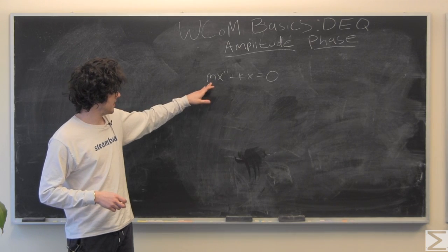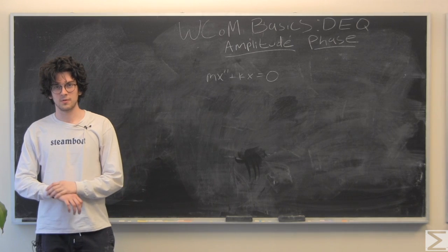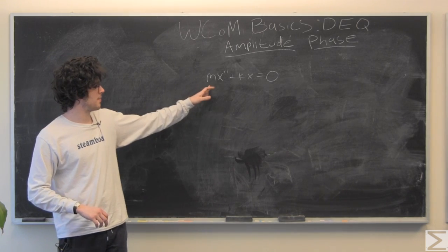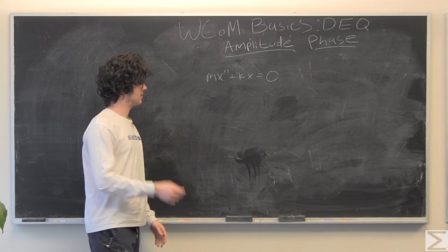So, we have an undamped oscillator with no force acting on it, so we just have a mass and a spring, basically. Dividing throughout by m.